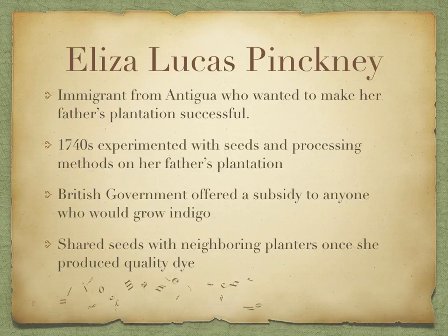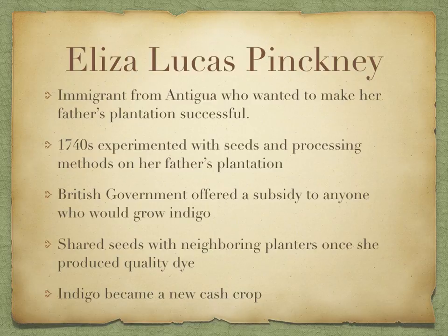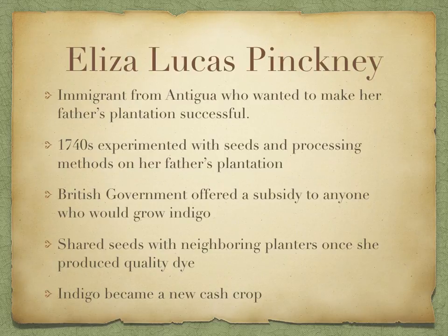Indigo became a new cash crop for South Carolina because of Eliza Lucas Pinckney. She shared seeds with neighboring planters when she produced a high-quality dye. The British government offered a subsidy to anyone willing to grow indigo. Her son Charles Cotesworth Pinckney was an aide to George Washington and ran for president twice. Her other son Thomas Pinckney became the governor of South Carolina and served as ambassador to Great Britain during and after the American Revolution.